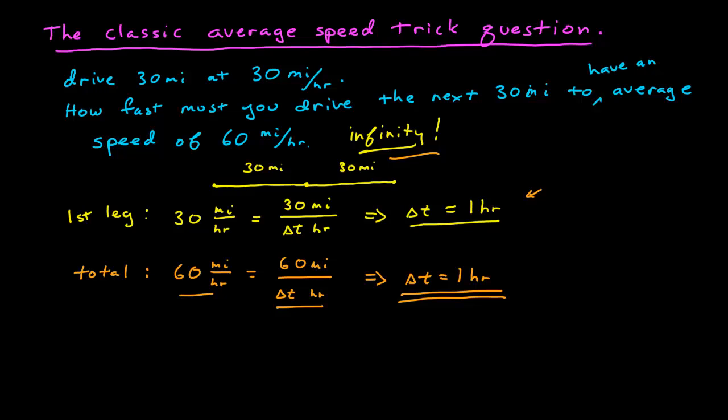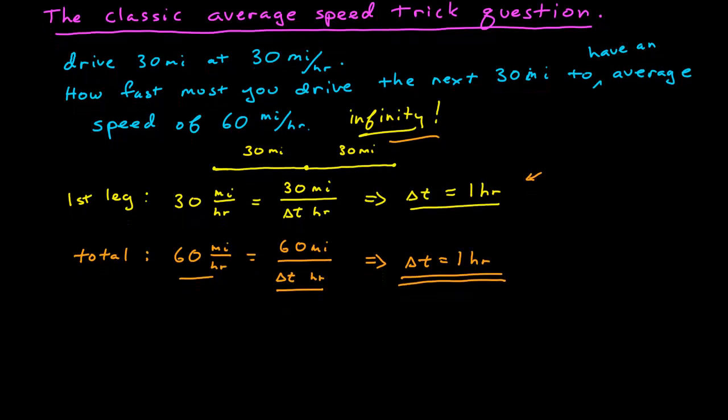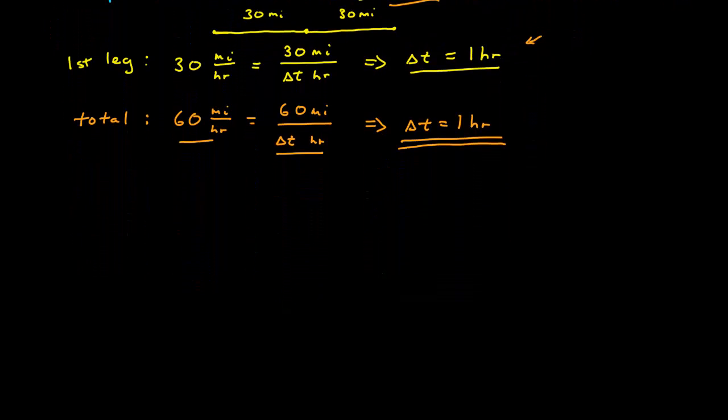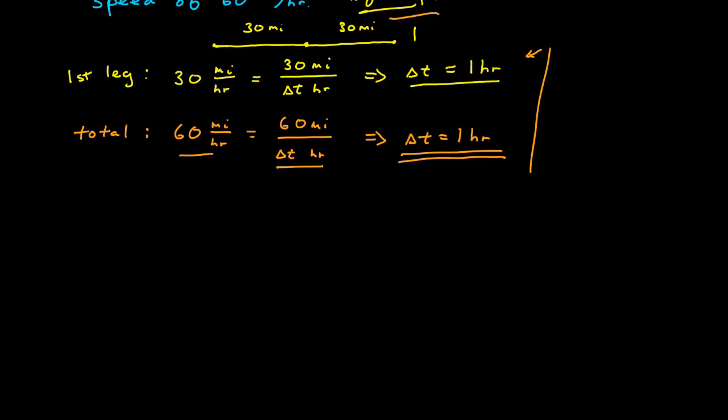So this example throws people the first time they see it. And so when you find an example that throws you a little bit, it's worth exploring it. So how exactly does this happen, and why does this happen? So let's take a closer look. So I have two legs of this journey. Each is 30 miles.